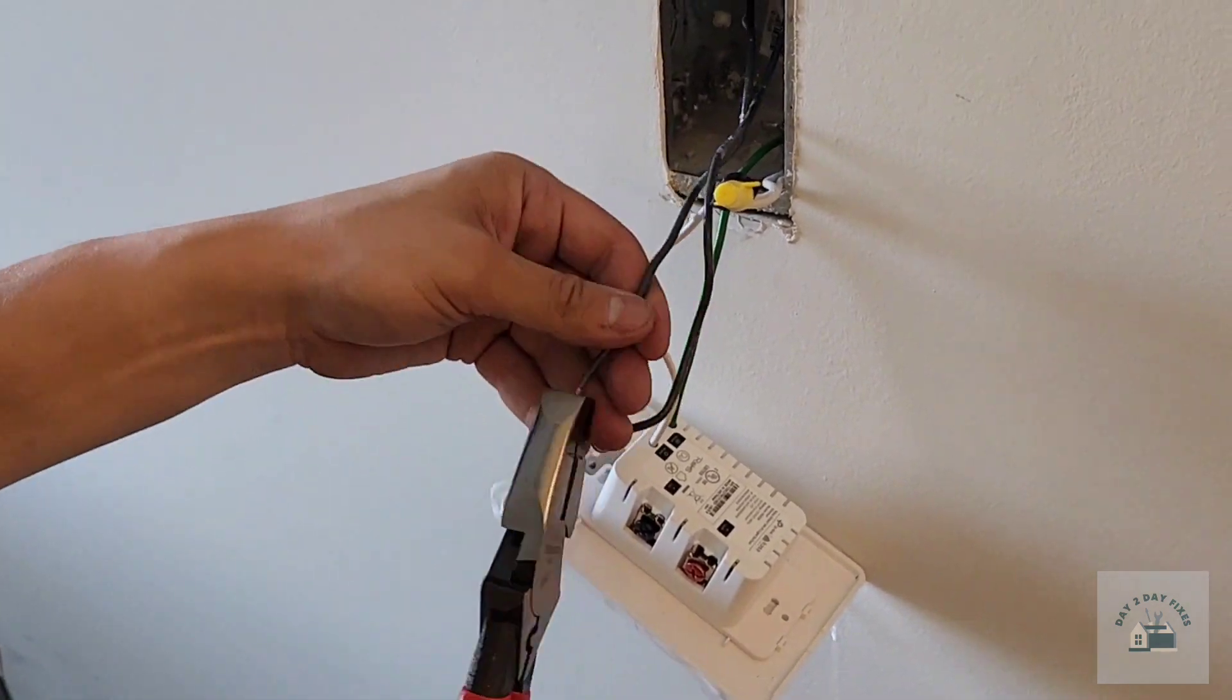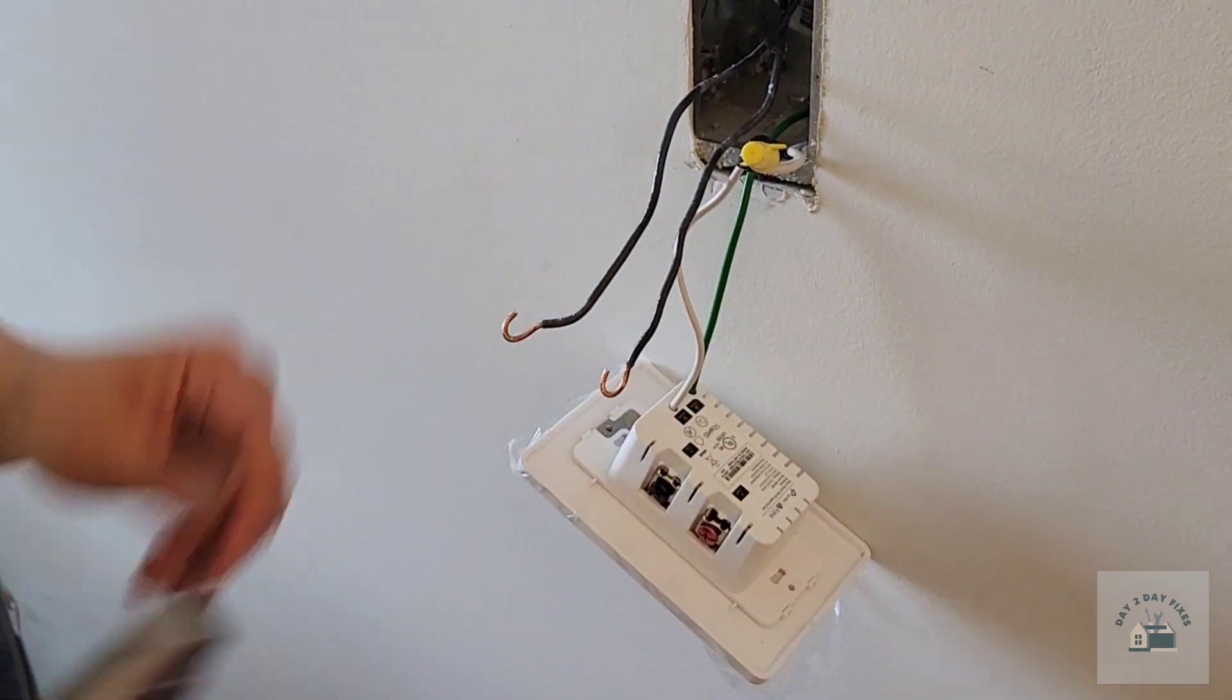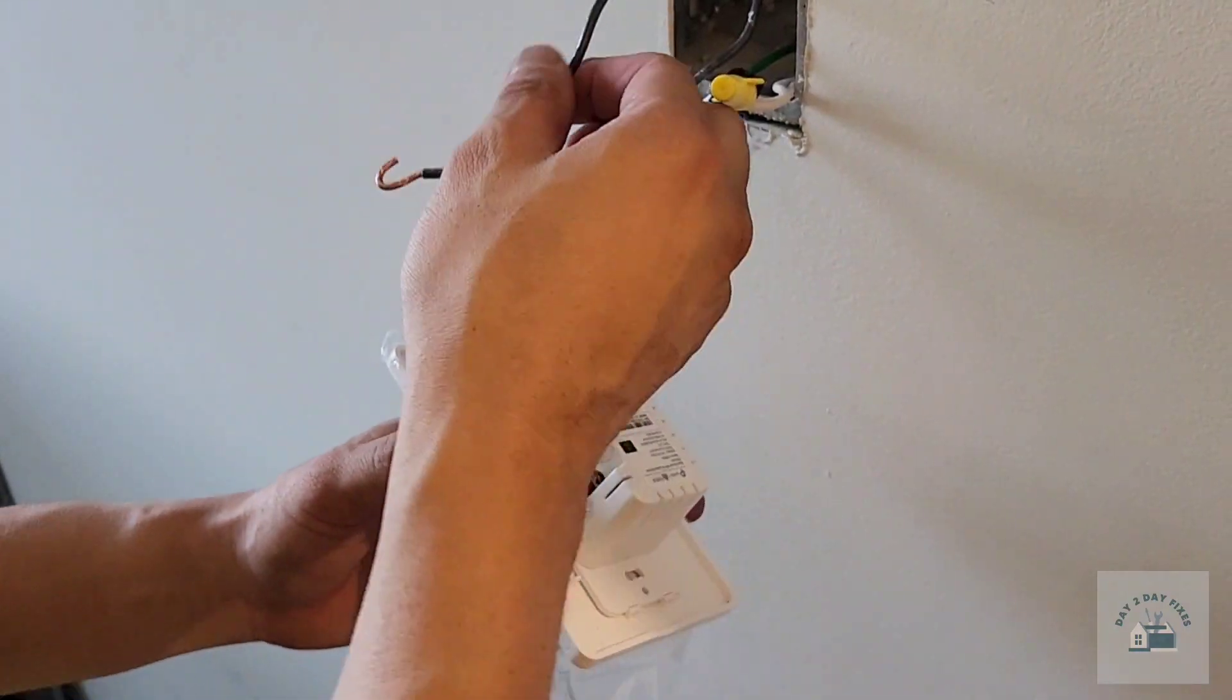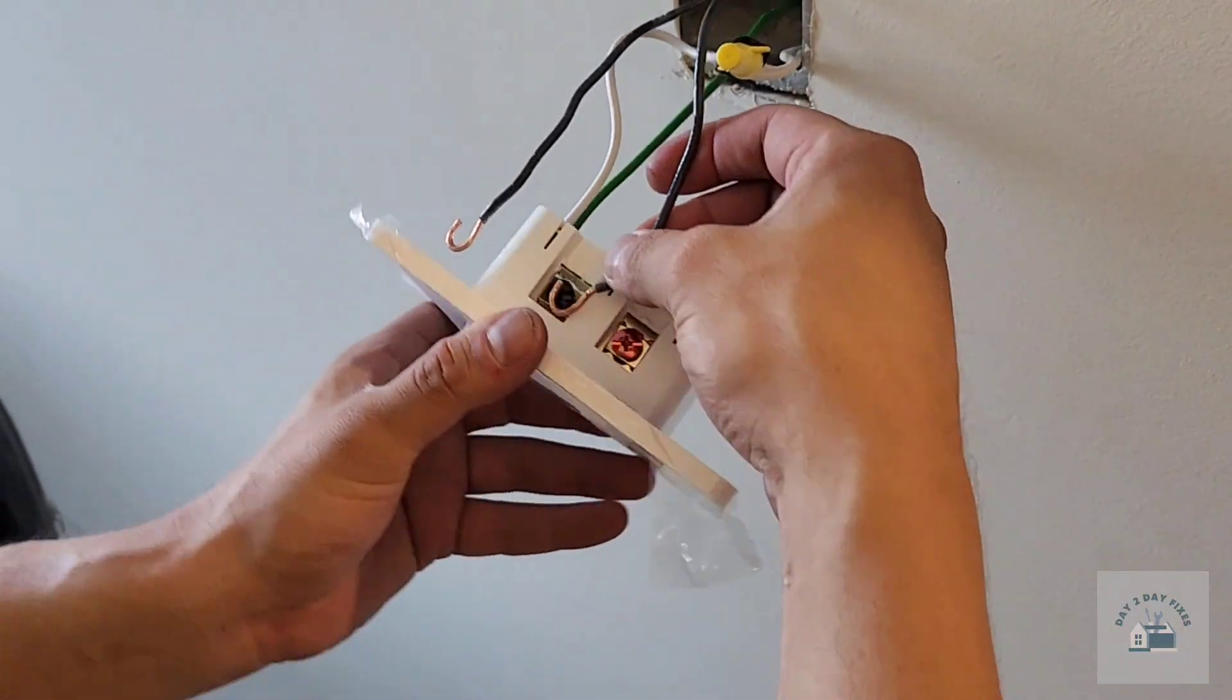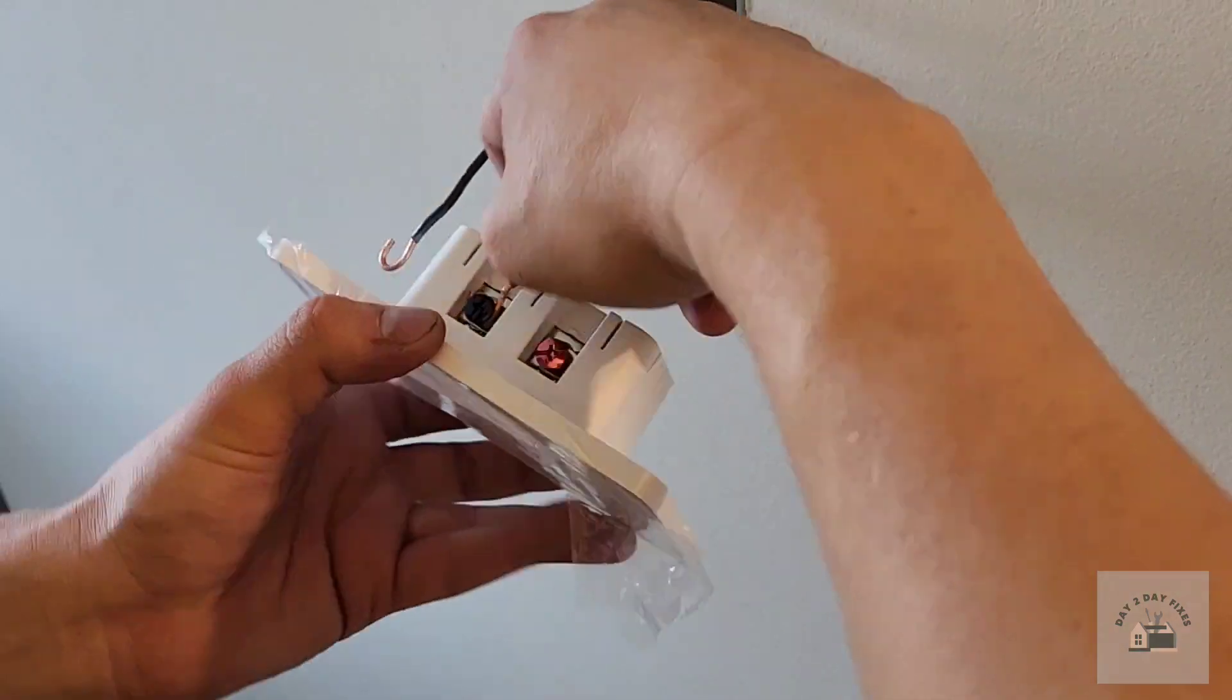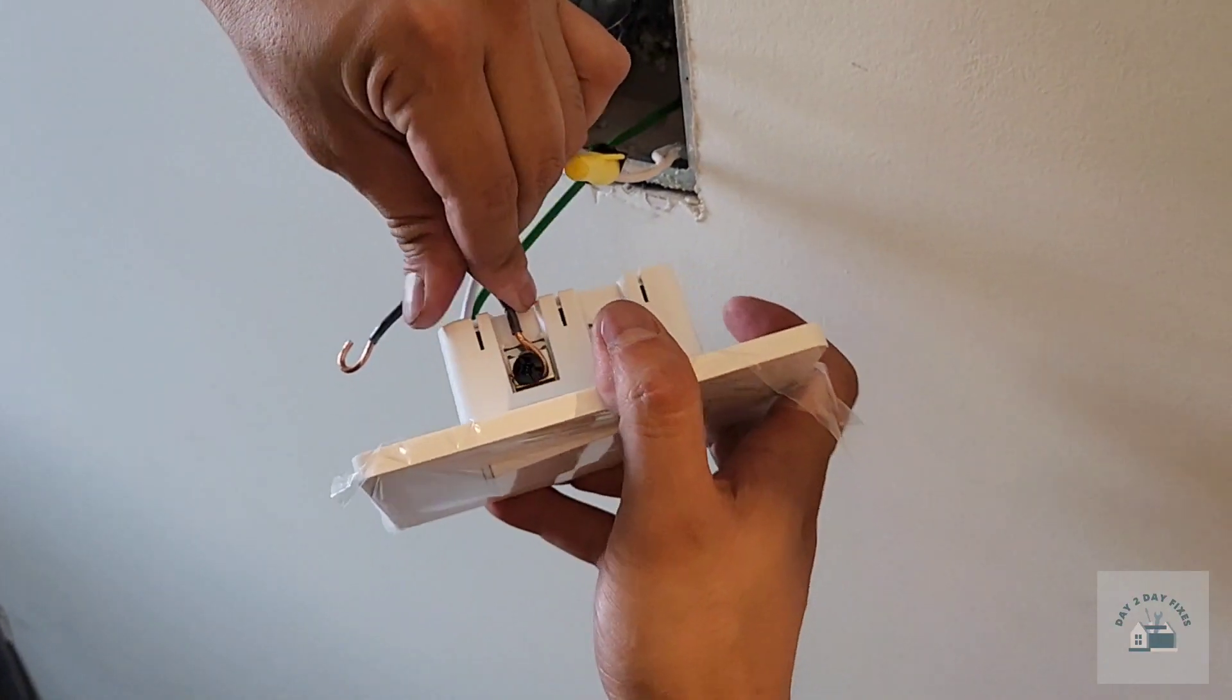Basically, when you start tightening the screw, the wire tightens with the screw and you have a better connection. There won't be any loose connections.